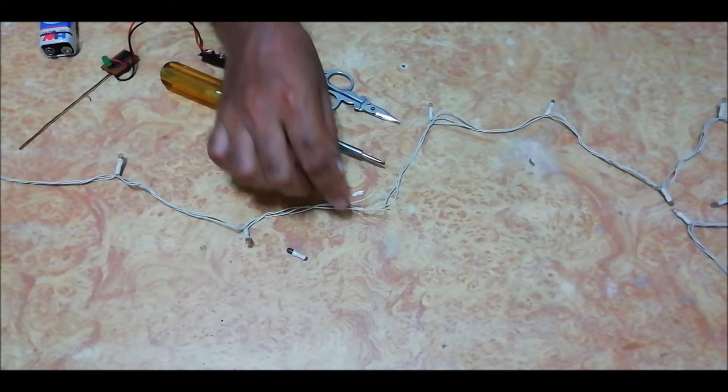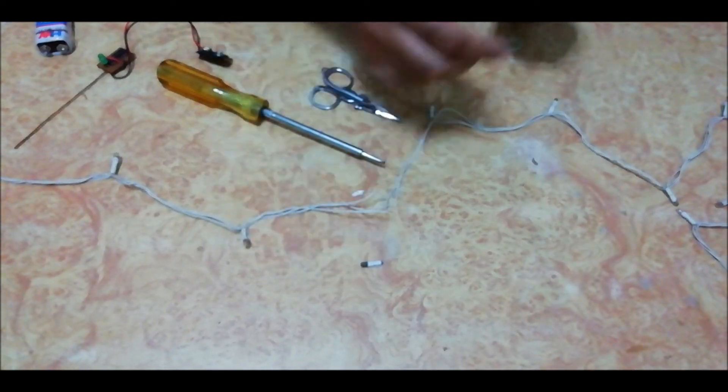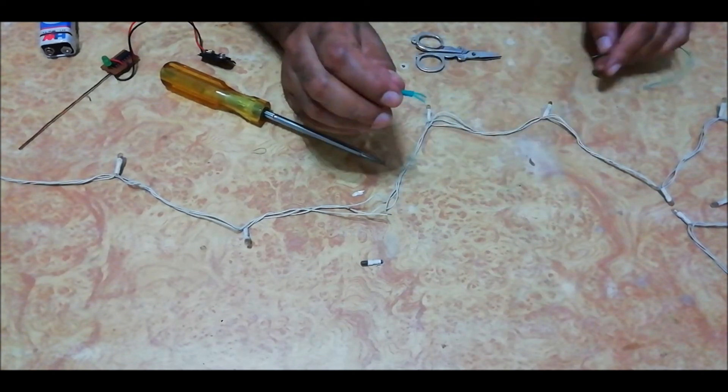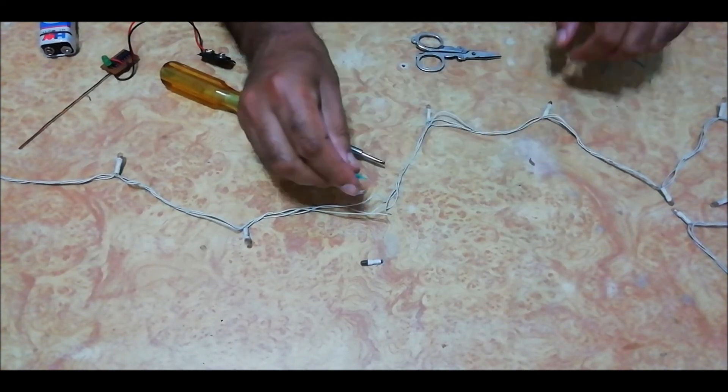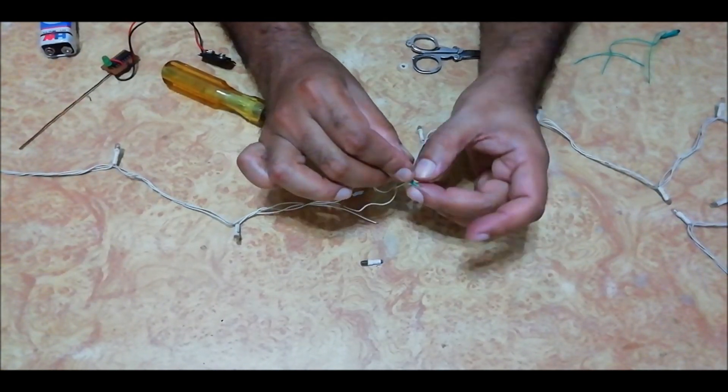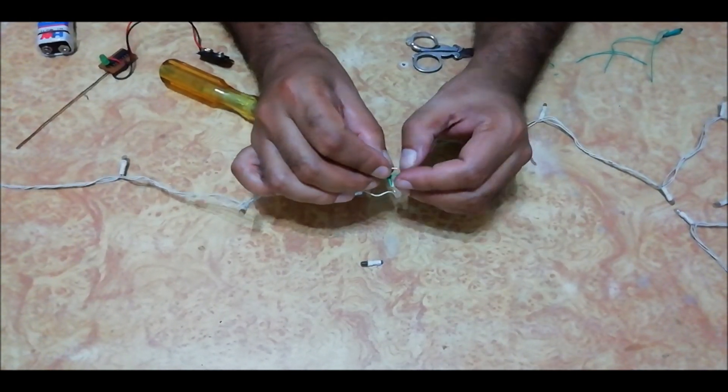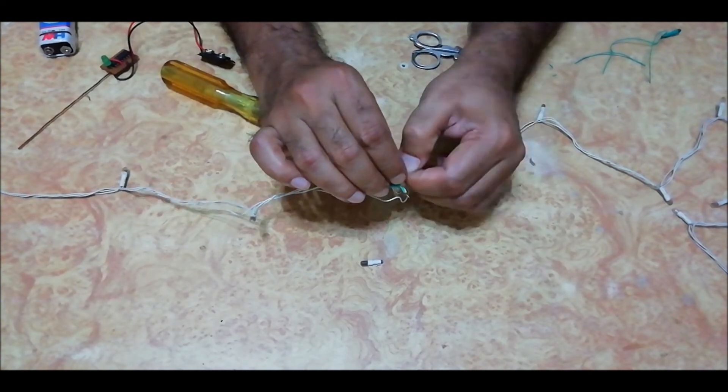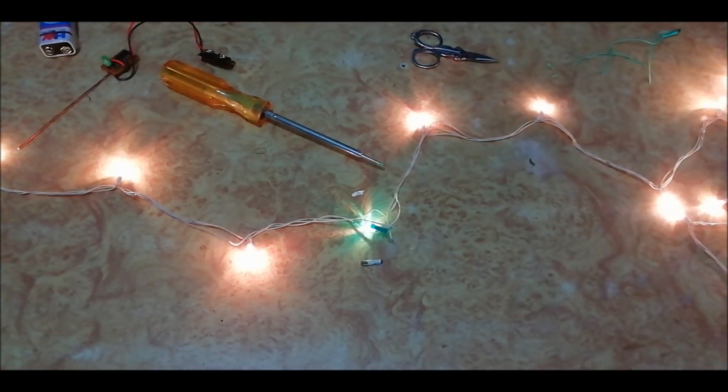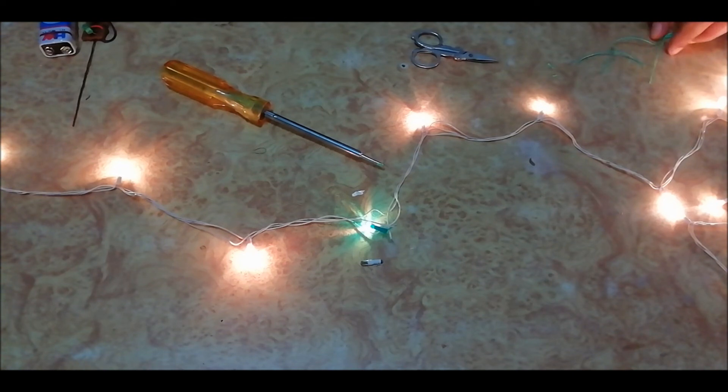We can also replace this bulb with another rice bulb. Now again give the power supply. As you see, it is working perfectly. We can use this method to repair any type of series bulb light.